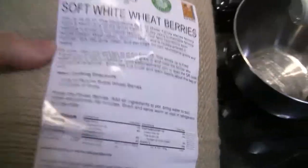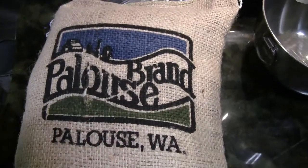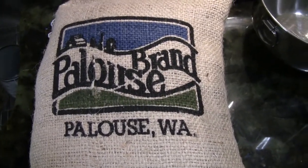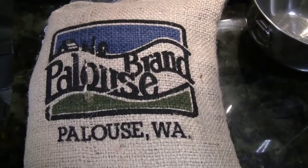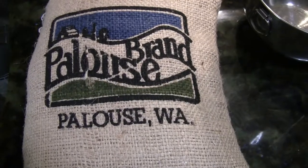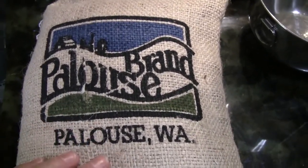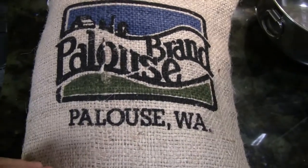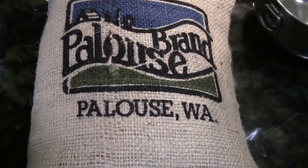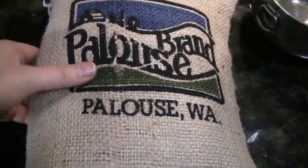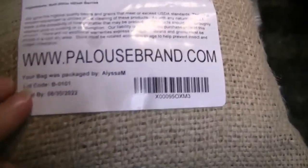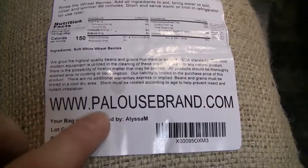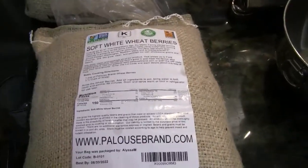This is Palouse brand - I'm going to put a link in the YouTube description where you can order it. I got a three pack from Amazon: soft white wheat, hard white wheat, and hard red wheat. The red wheat has the highest protein, the white wheat is in the middle, and the soft white is what you would use for cakes and pastries. It even tells you who packaged it - Alyssa M, who I believe also answered my email. You can tell them that Doreen sent you.